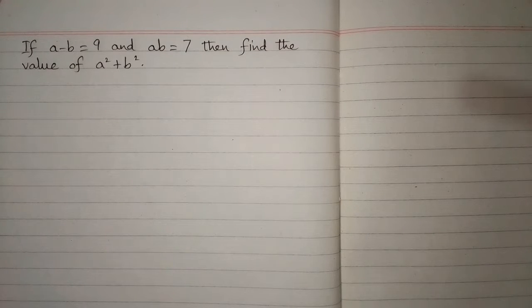If A minus B is equal to 9 and AB is equal to 7, then find the value of A square plus B square.